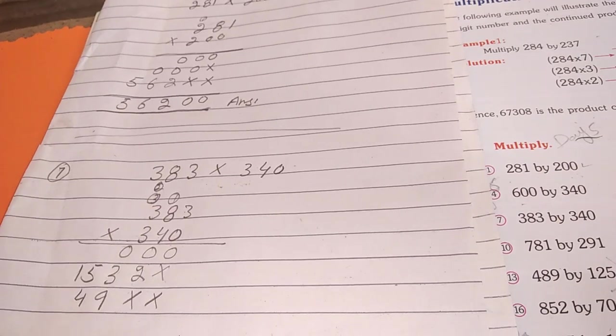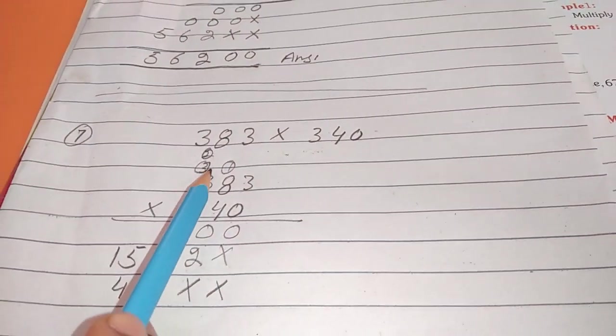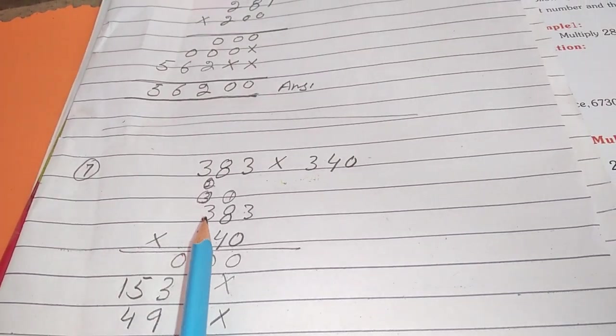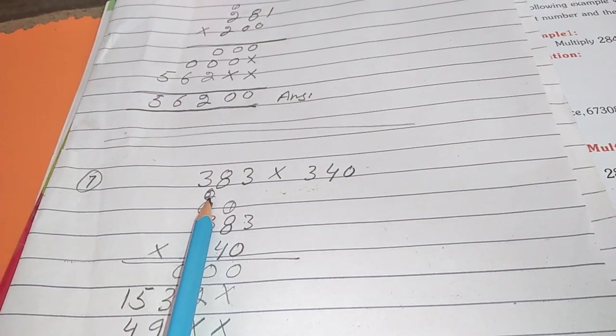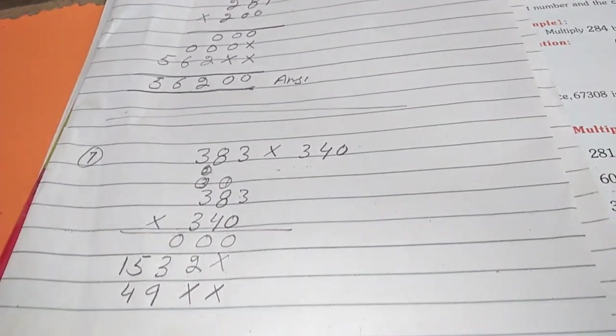9 and 3 is 12. 3 times 3 is 9, and 2 we will add. 9 and 2 is 11.